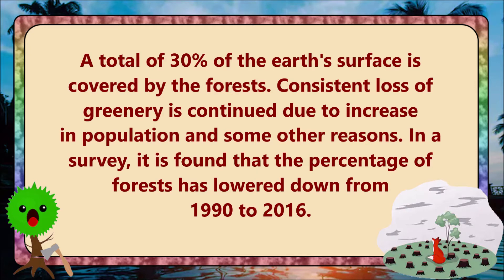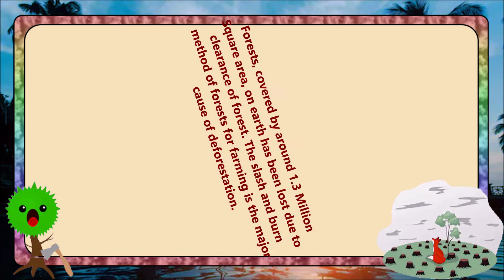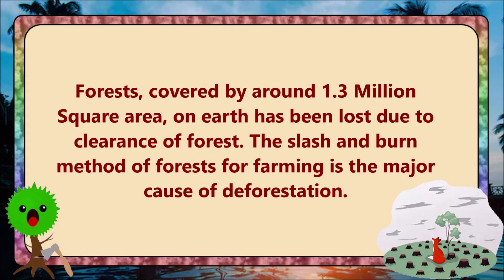In a survey, it is found that the percentage of forests has lowered down from 1990 to 2016. Forests covering around 1.3 million square area on Earth have been lost due to clearance of forest. The slash and burn method of forests for farming is the major cause of deforestation.